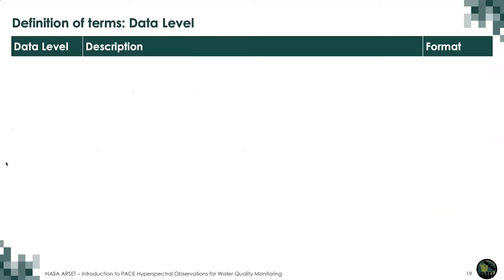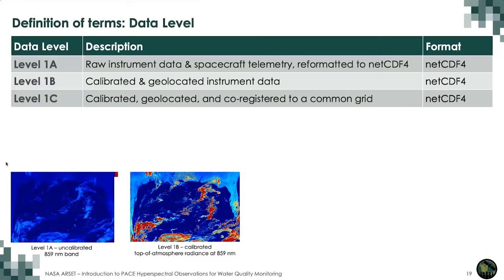In the next three slides, I'll define three important terms you'll need for the rest of today's session. The first term is data level — this refers to the level at which data has been processed. After collection by the instrument — considered Level 0 format — that data is processed through Levels 1A through 1C, essentially converting raw instrument and telemetry data into NetCDF4 format. That data is then calibrated, geolocated, and registered to a common grid, which brings us to Level 2 data.